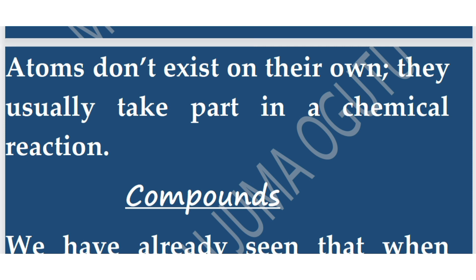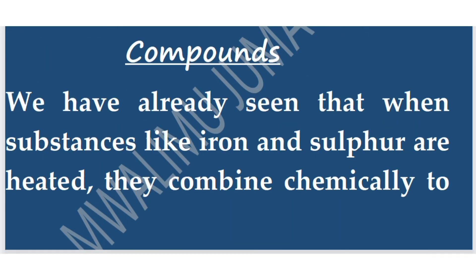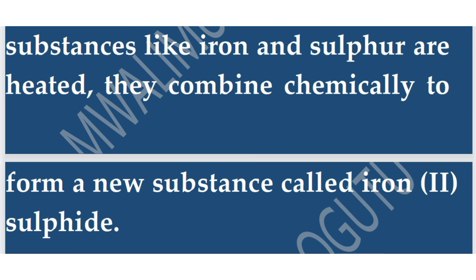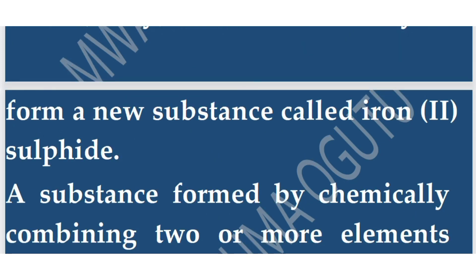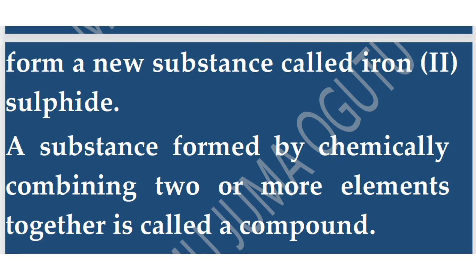Now let's look at compounds. We have already seen that when substances like iron and sulfur are heated, they combine chemically to form a new substance called iron(II) sulfide. A substance formed by chemically combining two or more elements together is called a compound.